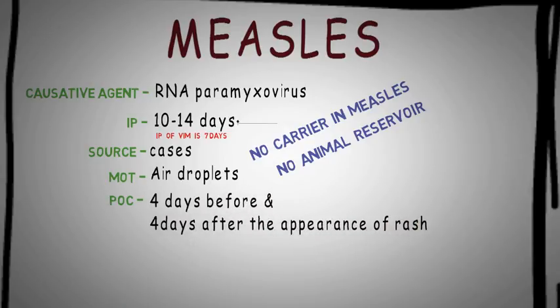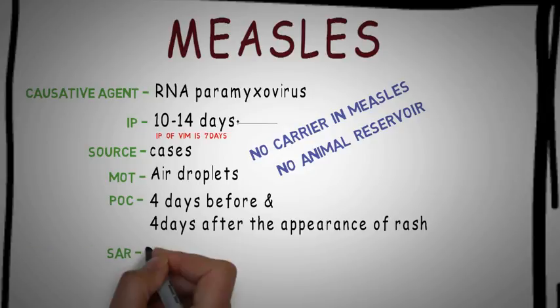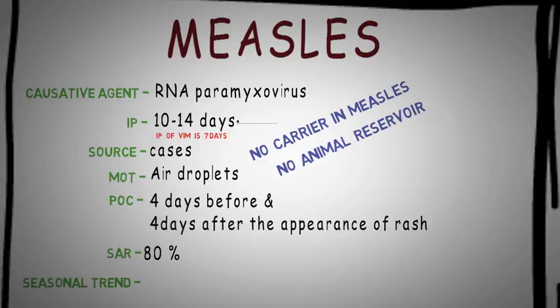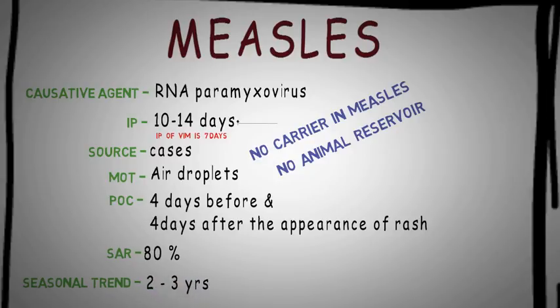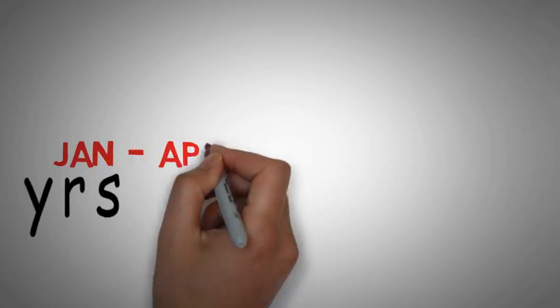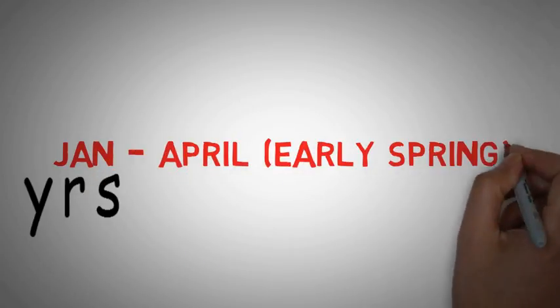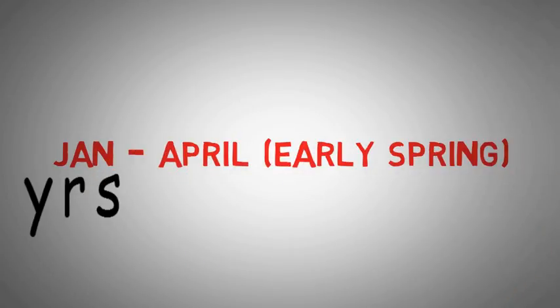The period of communicability of measles is from 4 days before to 4 days after the appearance of rash. The secondary attack rate of measles is 80%. Measles also shows a seasonal trend every 2 to 3 years, mainly occurring in the period of January to April, i.e., in early spring.